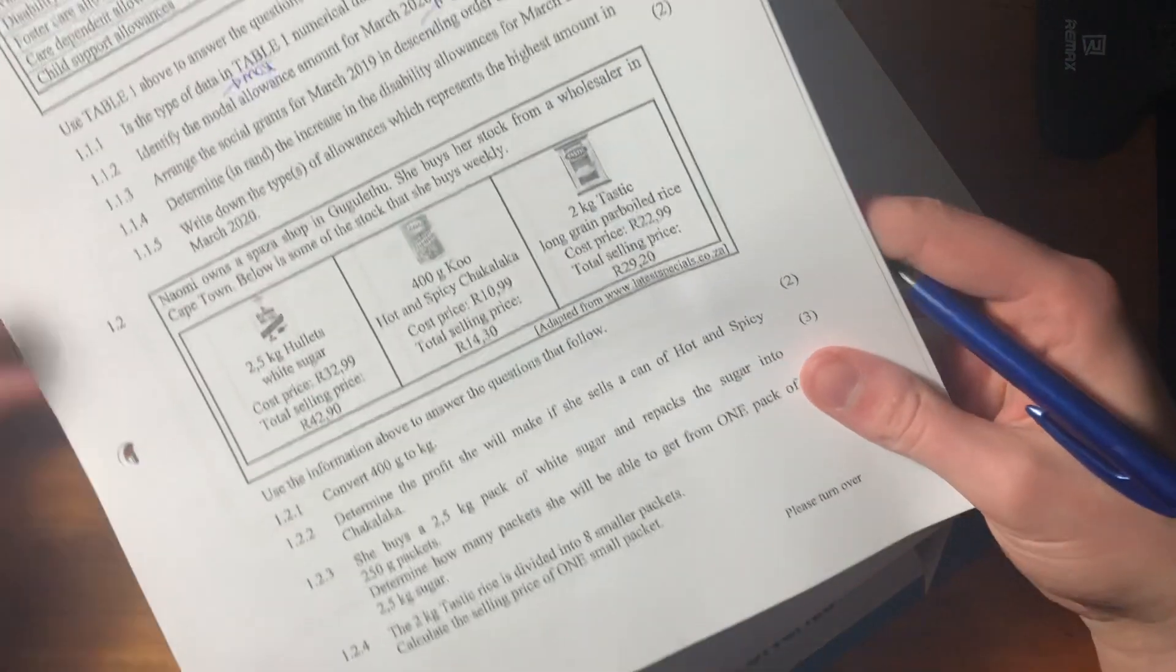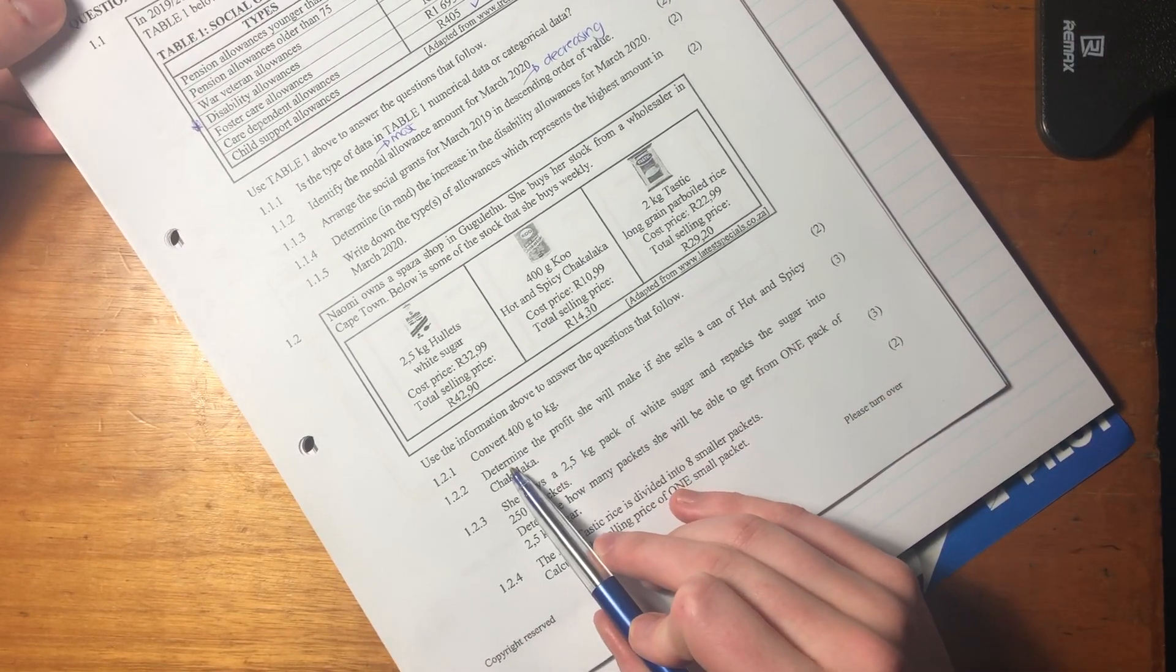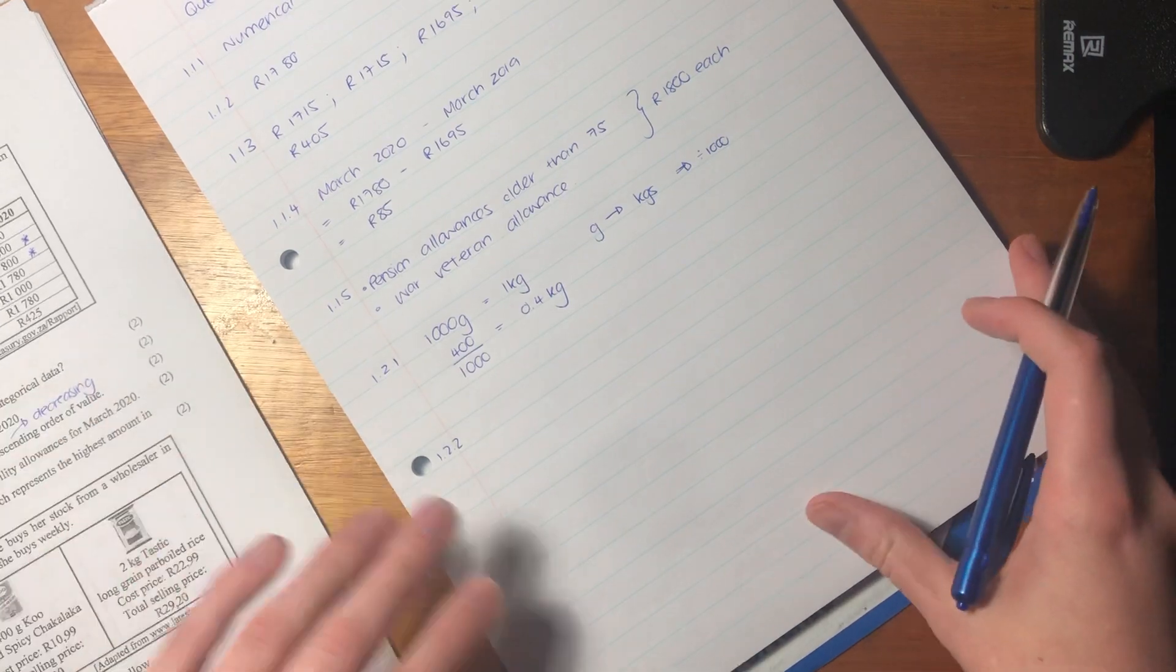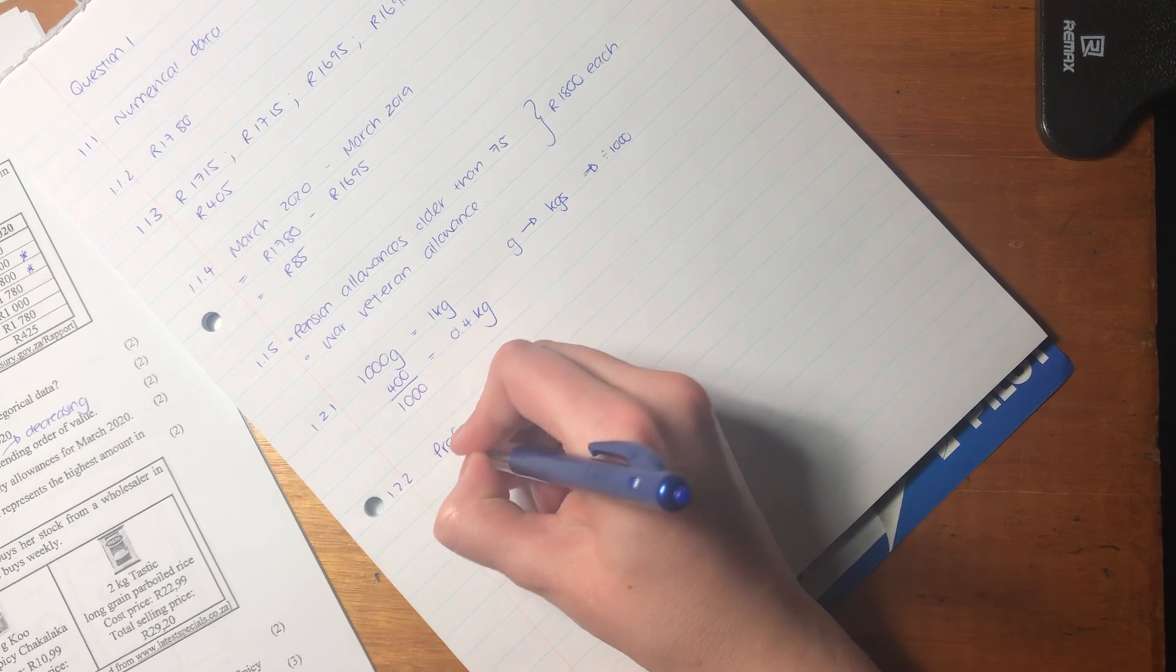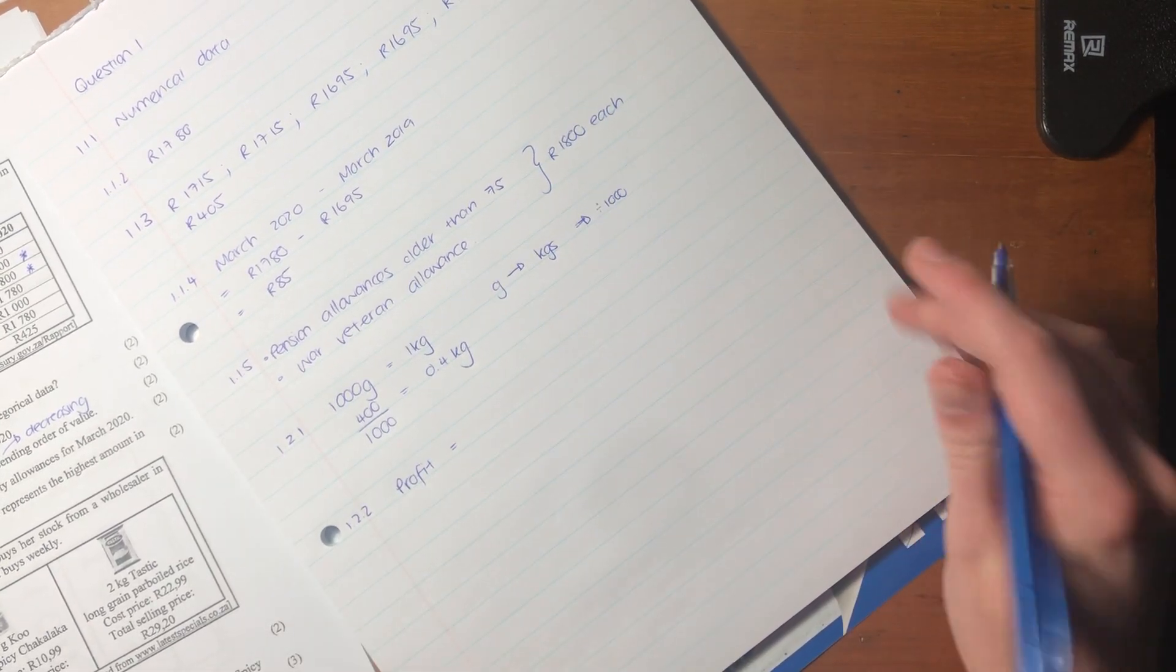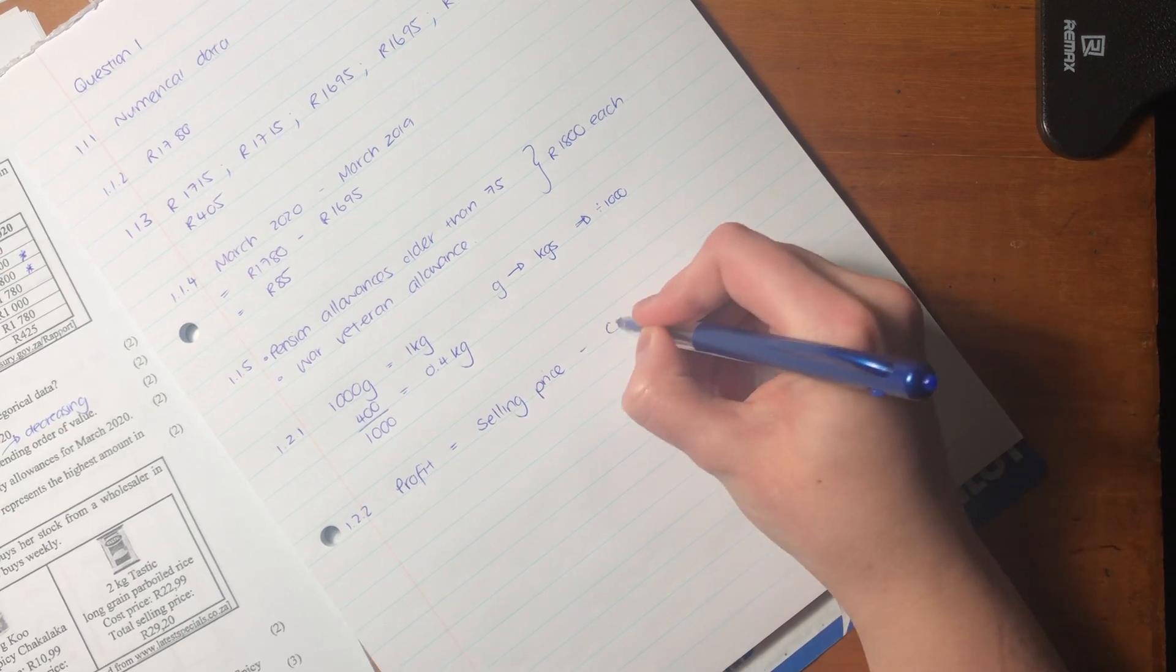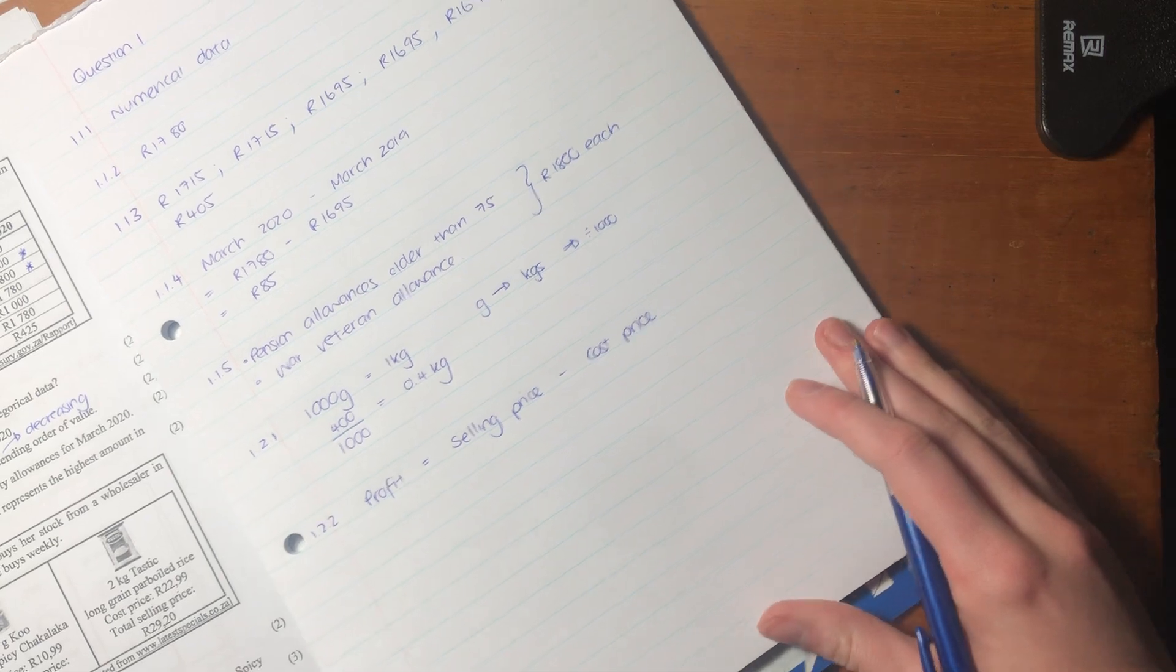Let's go on to 1.2.2. It says determine the profit she will make if she sells a can of hot, spicy chakalaka. What's important here is that we understand how to calculate profit. Profit equals your selling price, the amount that someone in your shop buys something at, minus the cost price. The cost price is what you paid for it, your input cost.